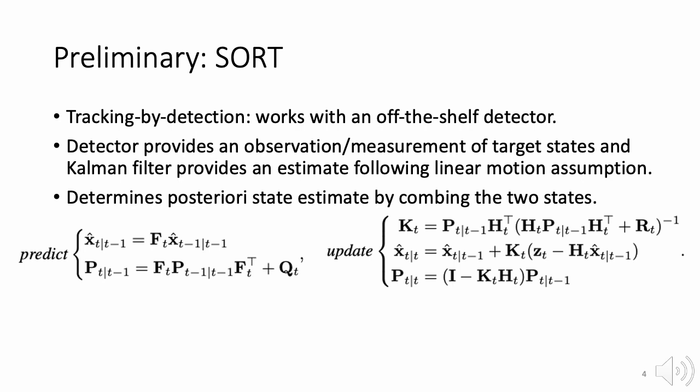Then, following the assumption of Gaussian noise, SORT calculates the optimal posterior estimation by combining the two states as the final state outcome.